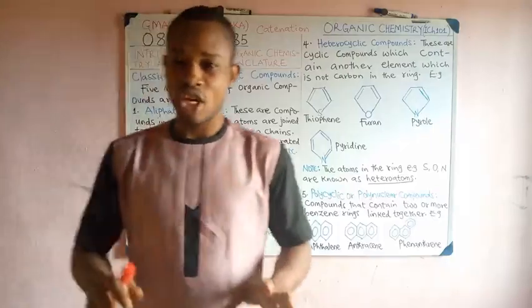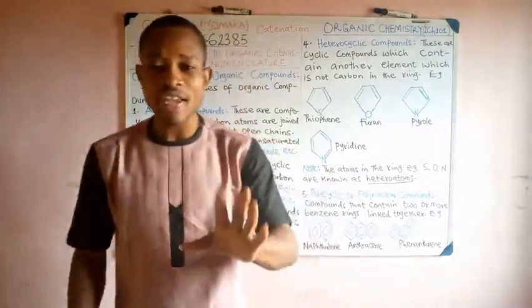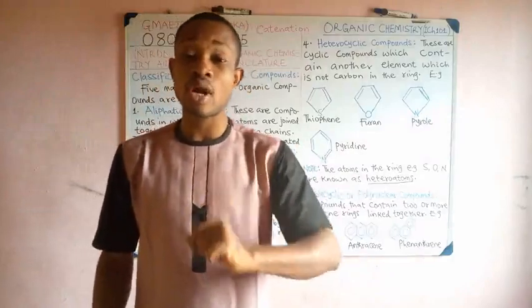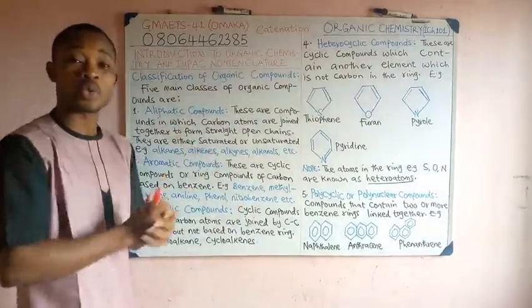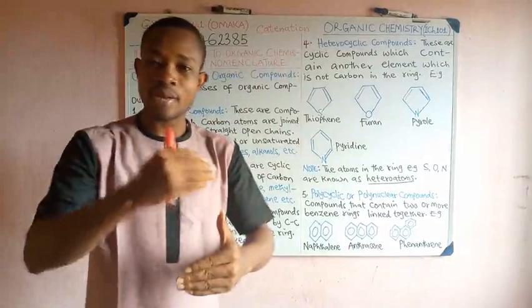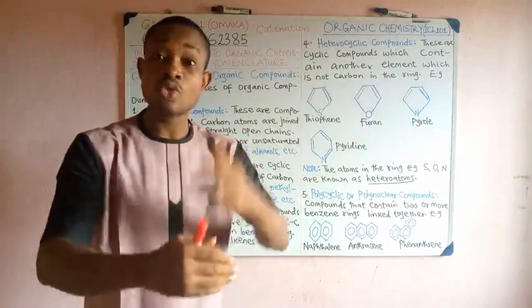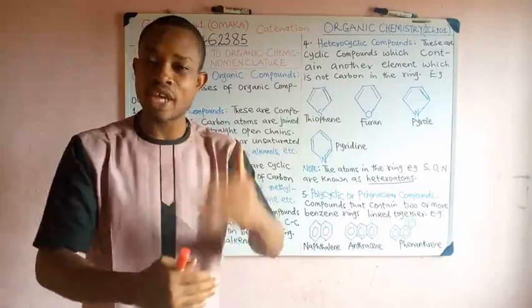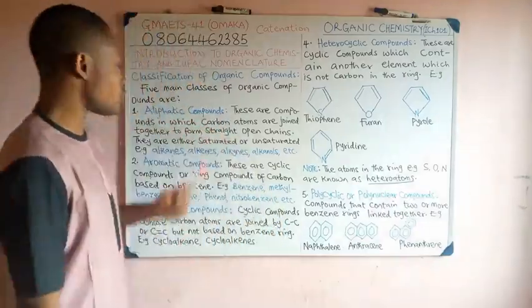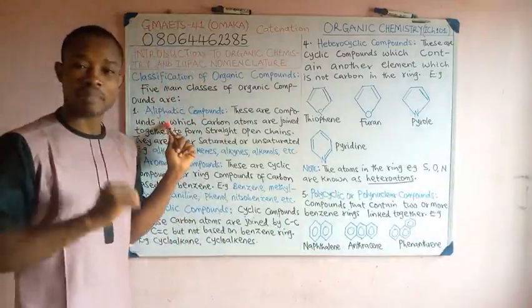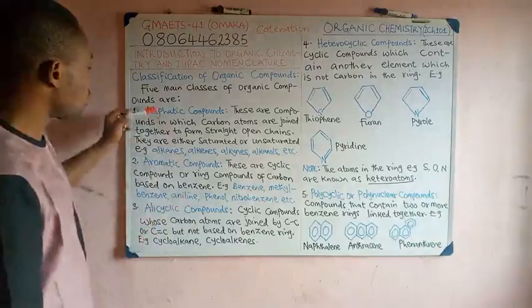We are now going to look at classification of organic chemistry. There are five main classes of organic chemistry. On the board here we have them. As you move on step by step to other higher forms of chemistry, you will be discussing these classifications one after the other. In organic chemistry 1, we shall focus on aliphatic compounds.